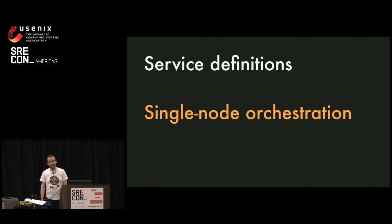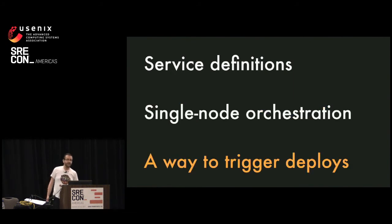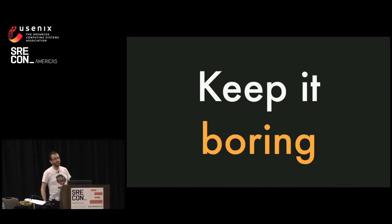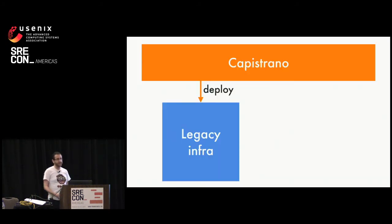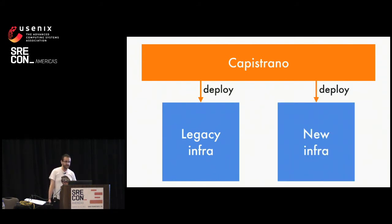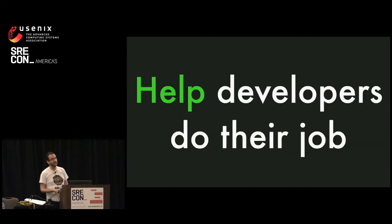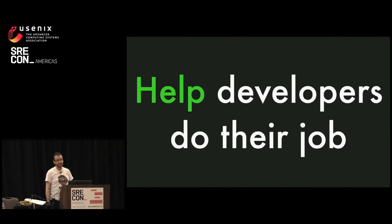So that's what our orchestration tool does in a nutshell. Once you've got that, you need some way to trigger deployments. We decided this was a piece we could keep boring and keep in Capistrano. What we ended up doing was writing our own Capistrano tasks that do almost nothing except invoke Conductor across the fleet. Which meant that while we were migrating between our legacy infrastructure and our new infrastructure, developers didn't have to think about two separate deployment systems — they could keep deploying things that made the business more money. One of the primary goals for an SRE team should be to help developers do their job; we're an enablement function and we shouldn't be getting in the way.